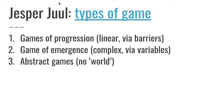Juul identifies three different types of games: games of progression, games of emergence, and abstract games. The abstract game is a game that doesn't have a world — Tetris is probably the best known example. A game of progression is one where you move up through different levels, fighting a different boss at each level; Donkey Kong would be an example of this. A game of emergence often involves being in some sort of game world that you're trying to change through different variables — The Sims is a very good example, and to some extent FIFA is a game of emergence because you're changing your players and tactics and seeing what happens.